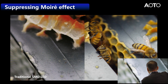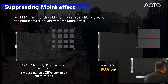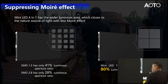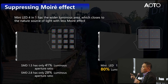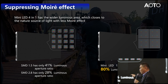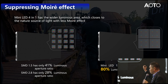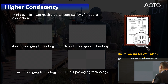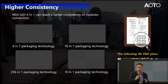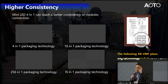Using Mini-LED, you can suppress the moiré effect significantly. You can see that with traditional SMD, for the same picture and same focus, there is a lot of moiré effect. But with Mini-LED, the image is completely clear. The reason is that Mini-LED has an aperture ratio of more than 80%, while traditional SMD at the same 1.5mm or 2.3mm pitch has an aperture ratio of only 41% and 28% respectively. This means Mini-LED produces a light surface effect instead of a pixelated feeling.